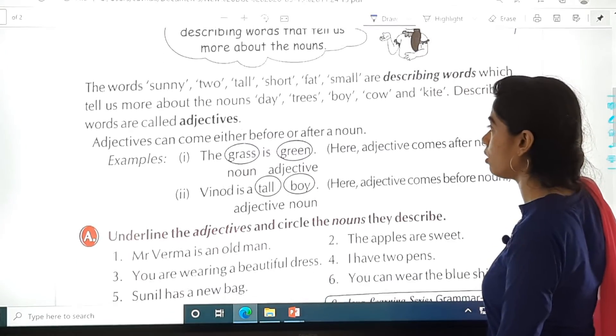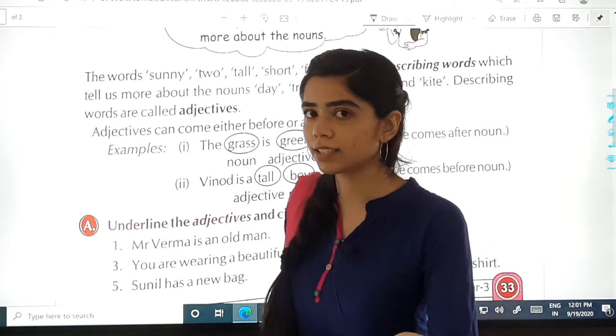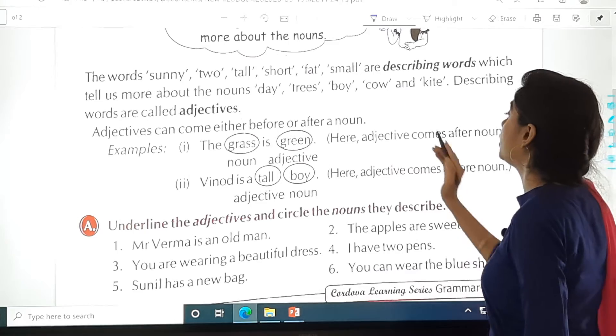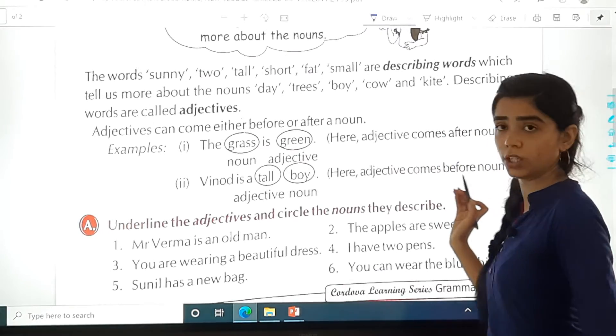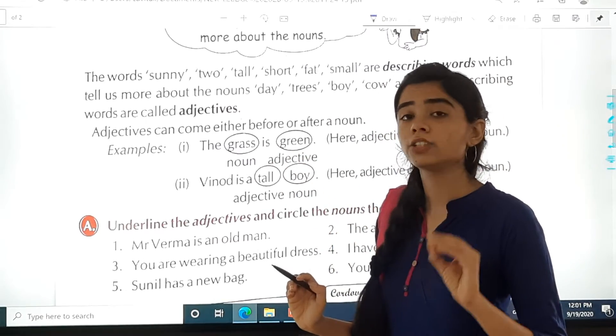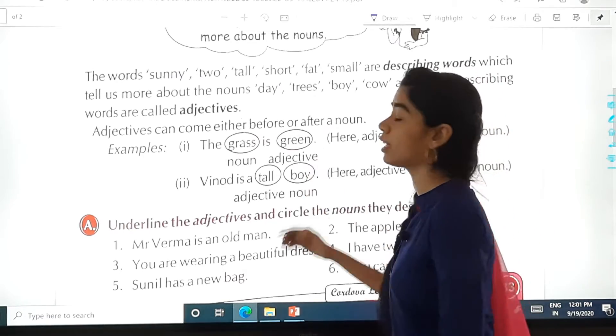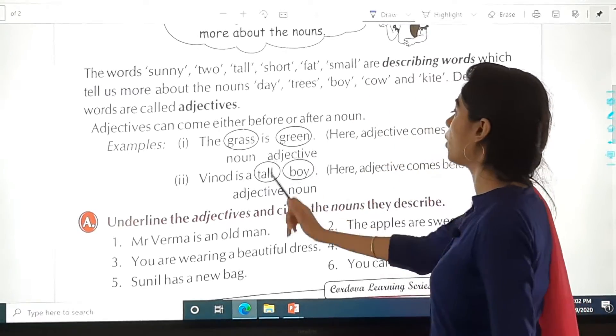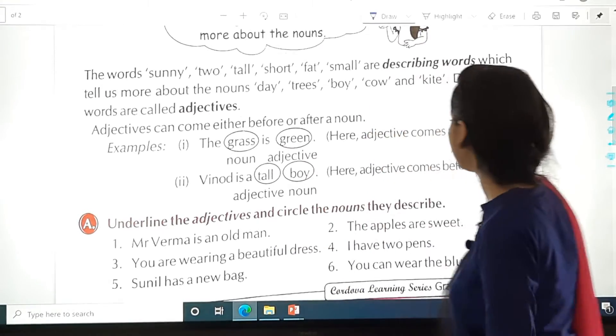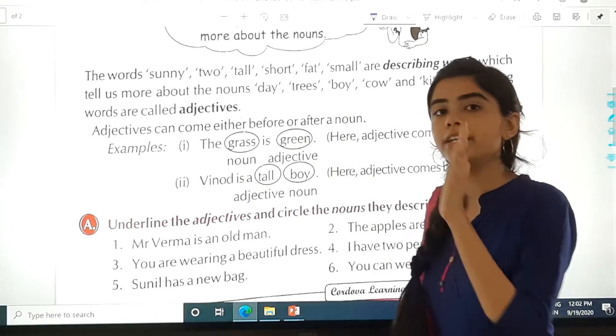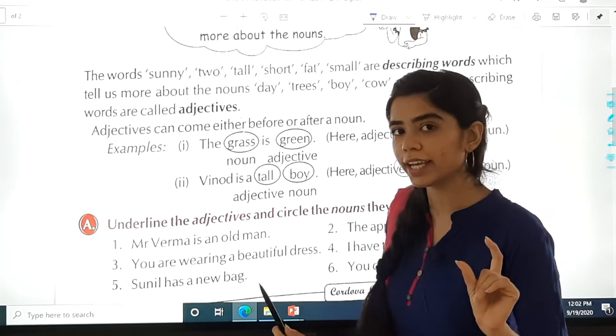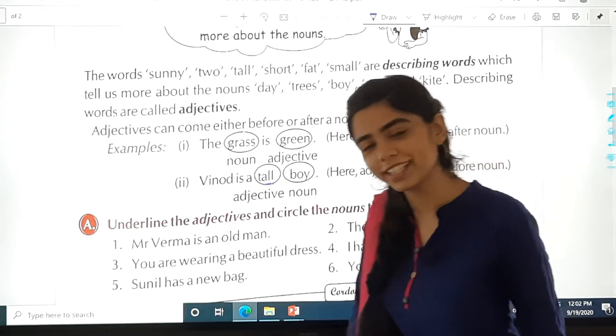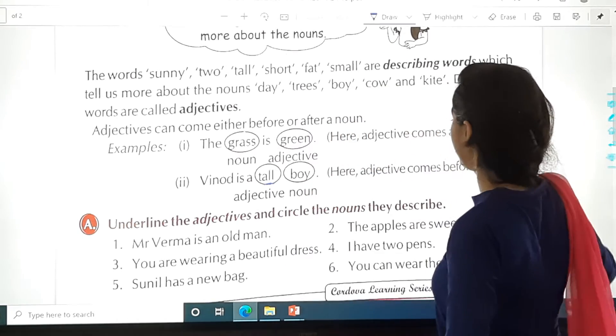Adjectives can come either before or after a noun. For example, the grass is green. Your adjective comes after the noun. Grass is our noun, and green is our describing word. So green will be the adjective. Now Vinod is a tall boy. In this sentence, adjective comes before noun. Boy is our noun, and Vinod is a tall boy. So tall is our adjective. Is it clear now? Now we'll do the exercise.